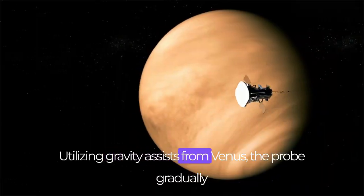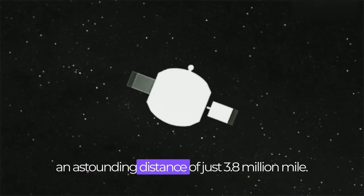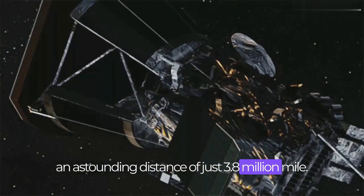Utilizing gravity assists from Venus, the probe gradually brings its orbit closer to the Sun, reaching an astounding distance of just 3.8 million miles.